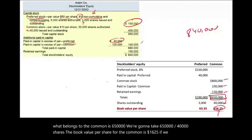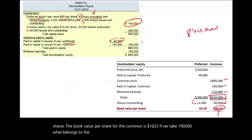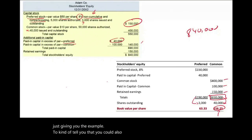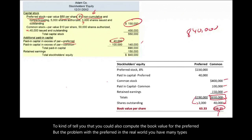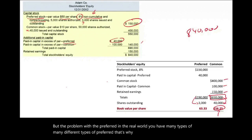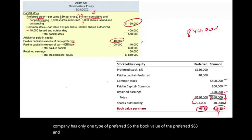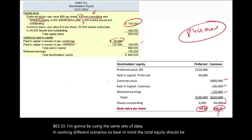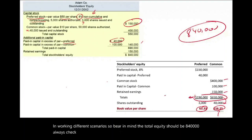What belongs to the preferred is $190,000. Dividing it by the number of preferred shares — in the real world you don't use this a lot, but you could also compute the book value for the preferred. The problem in the real world is that companies often have many different types of preferred stock, so you can't do that unless the company has only one type. The book value of the preferred is $63.33. I'm going to be using the same sets of data working through different scenarios — always check that your preferred and common equity add up to $840,000.